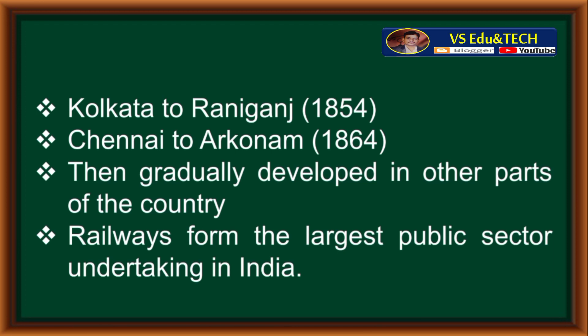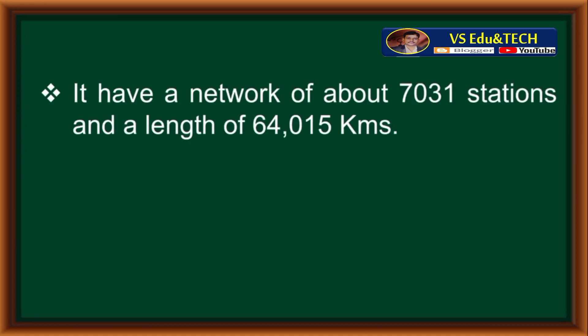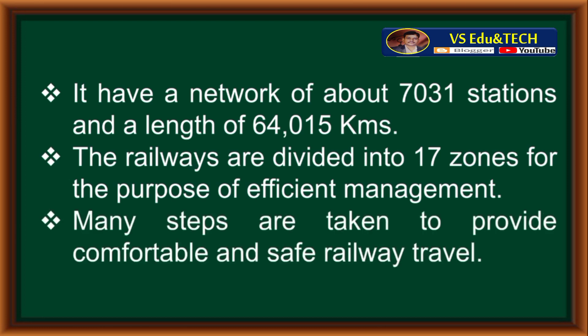Railways formed the largest public sector undertaking in India. It has a network of about 7,031 stations and a length of 64,015 km. The railways are divided into 17 zones for the purpose of efficient management. Many steps are taken to provide comfortable and safe railway travel.